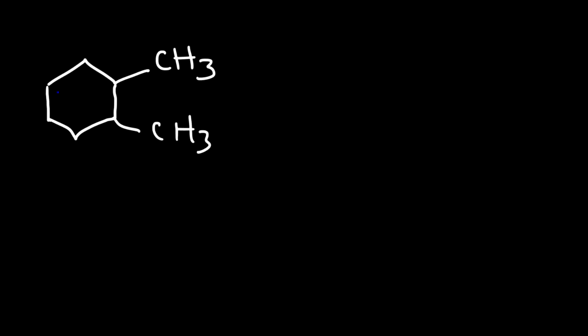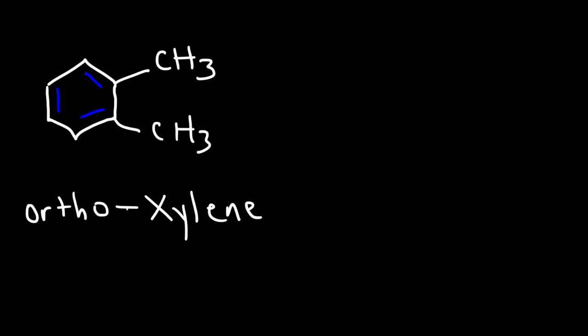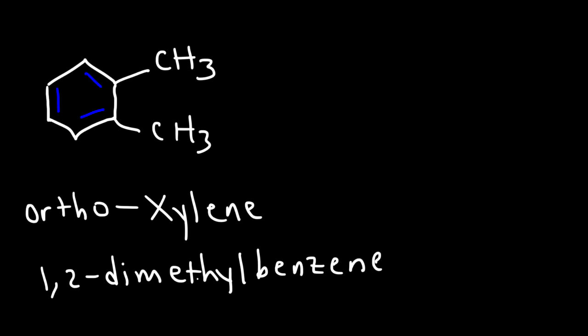Now let's move on to naming disubstituted benzene derivatives. We saw that one methyl group gives toluene. If we have two methyl groups attached to a benzene ring, it's going to be called a xylene. Specifically, when they are adjacent, this is ortho-xylene, also called 1,2-dimethylbenzene. Ortho is 1,2; meta is 1,3; para is 1,4.